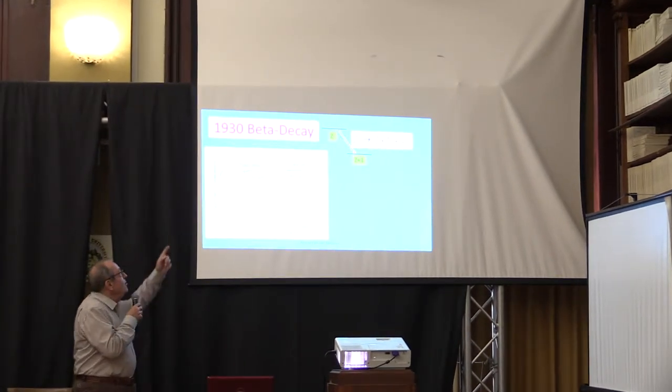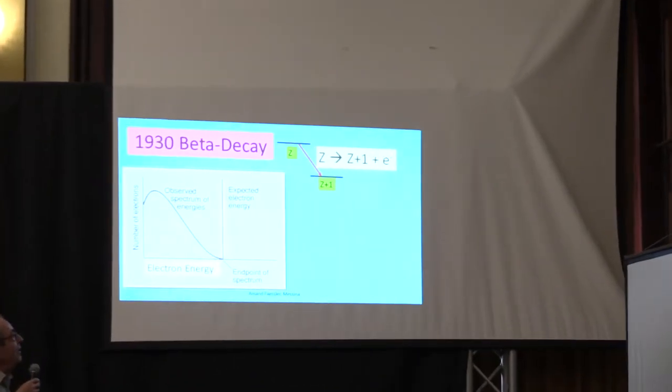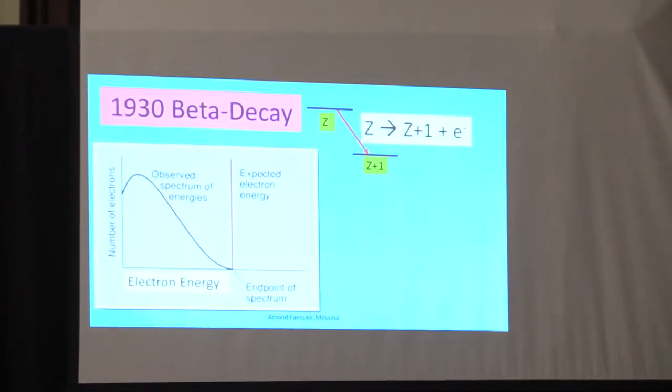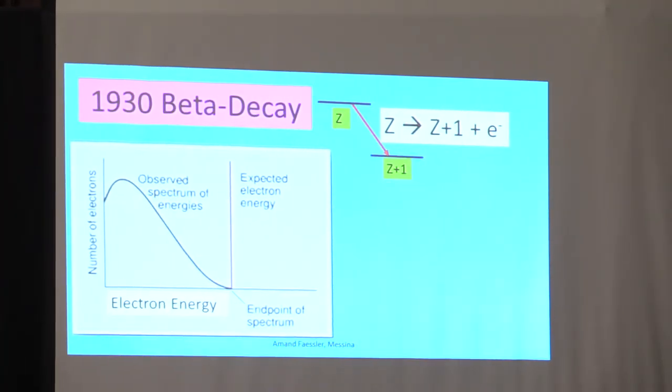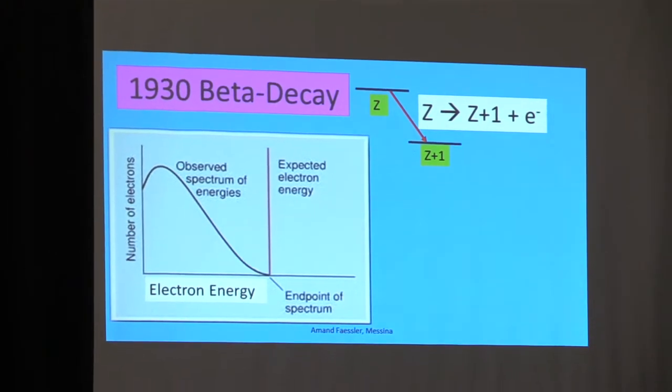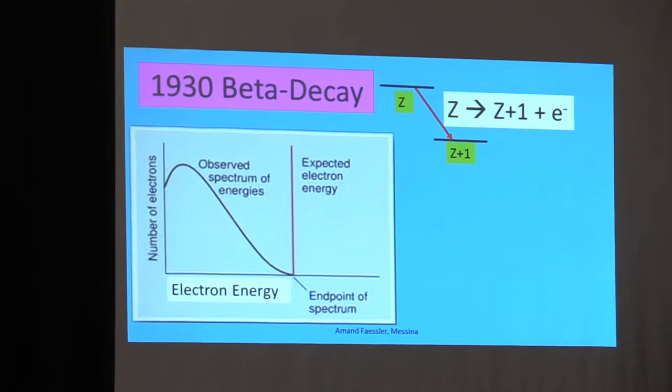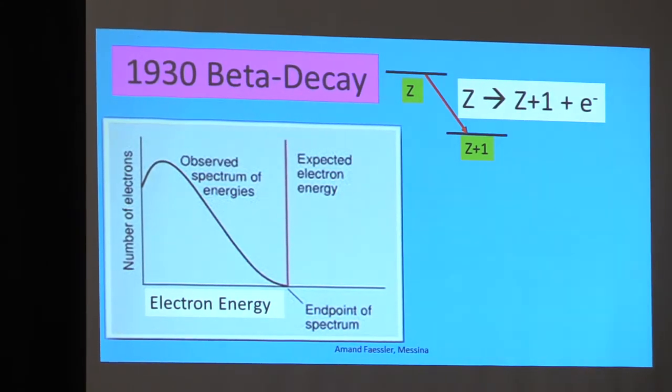The situation in 1930 about the beta decay was mentioned by the previous speaker. The problem is there is a nucleus with charge Z, today we would say seven protons, it was not so clear at that time. And the final nucleus has Z plus one protons and the total energy of this transition should be given to the emitted electron. So the electron should have, when you plot it as a function of the electron energy, a discrete line here.